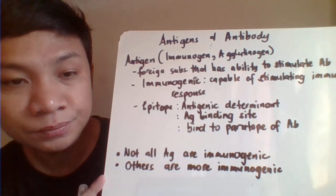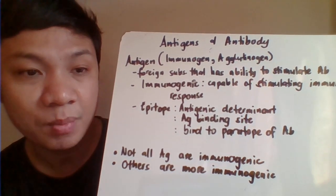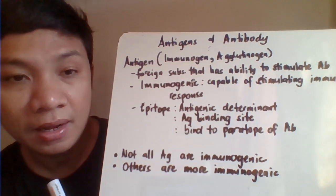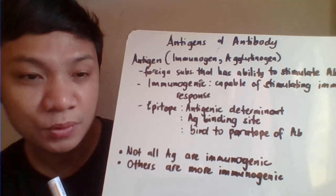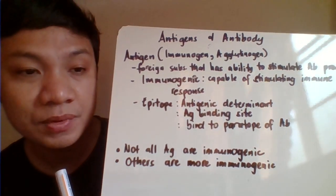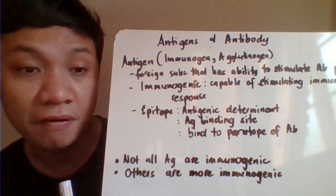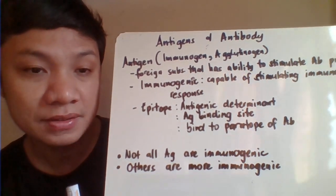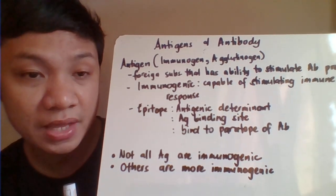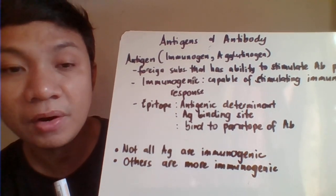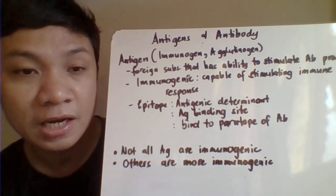The antigen is recognized by our immune response primarily because of the antigenic determinant, also called the epitope. This is the antigen binding site that can bind to the paratope of the antibody to produce your antigen-antibody complex. Not all antigens are immunogenic — only those capable of stimulating an immune response are considered immunogenic. Some antigens serve only as surface markers.